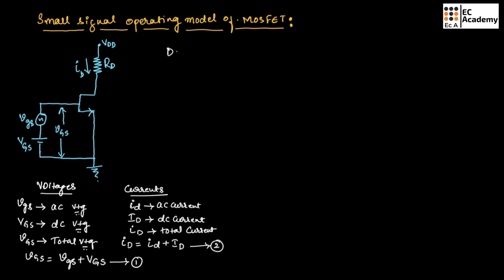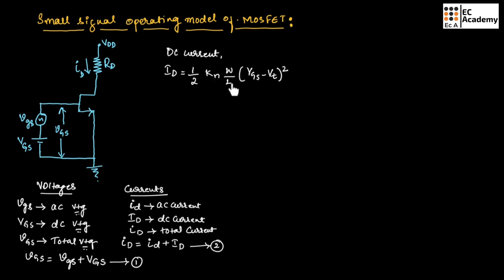We know the DC current can be given as ID = (1/2) · KN · (W/L) · (VGS − VT)², where KN is a constant, W/L is the transistor aspect ratio (width by length), VGS is the gate-to-source DC voltage, and VT is the threshold voltage. Let us call this equation number 3.